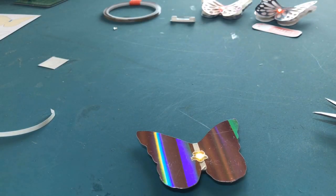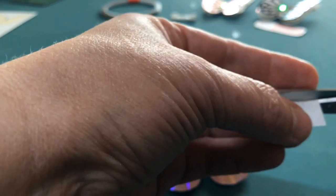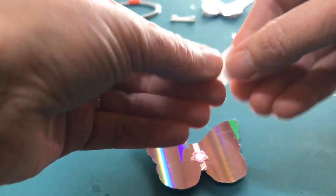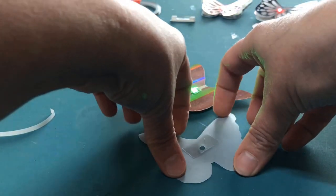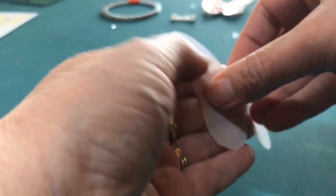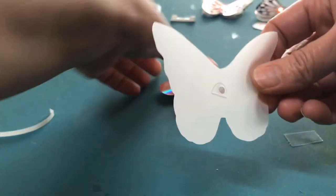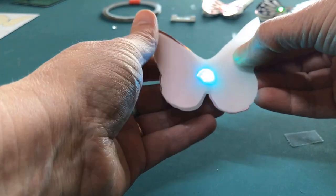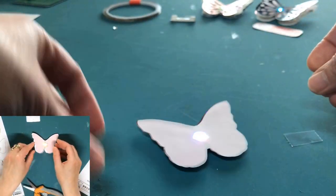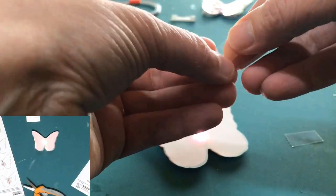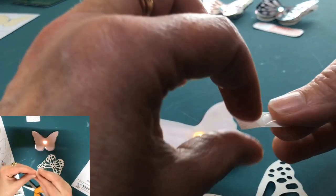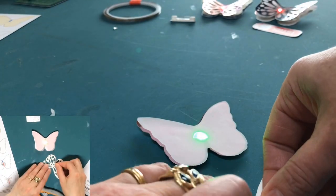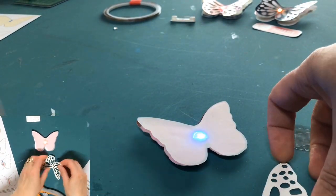Once you've verified that your circuit is working well, adhere half of a glue dot over the hole in the backside of your translucent diffusion layer. Position the hole over the LED and press down. Don't worry, the glue dot will not affect your circuit.